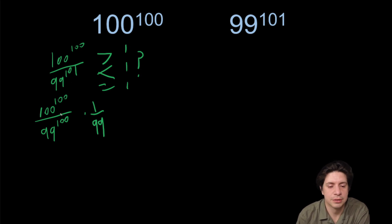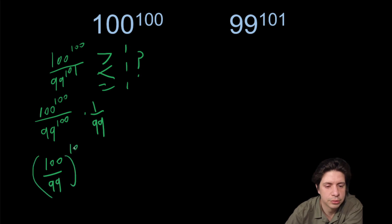Okay, so again, the 100 is still throwing us off. And what we can do is think about this as 100 over 99 to the 100th power times one over 99.